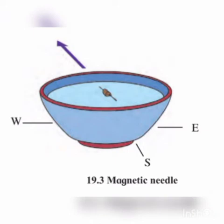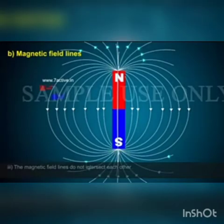In which direction does the magnetic needle point? The region around a magnet where the magnetic force acts on an object is called a magnetic field. The magnetic field around magnets can be shown by means of magnetic lines of force.